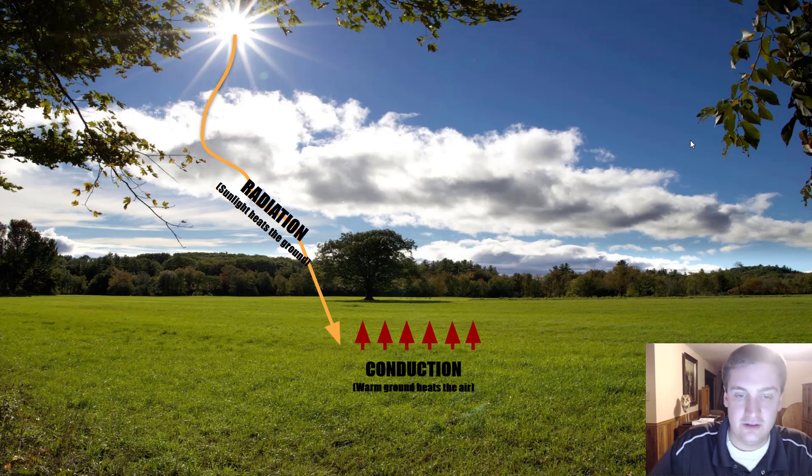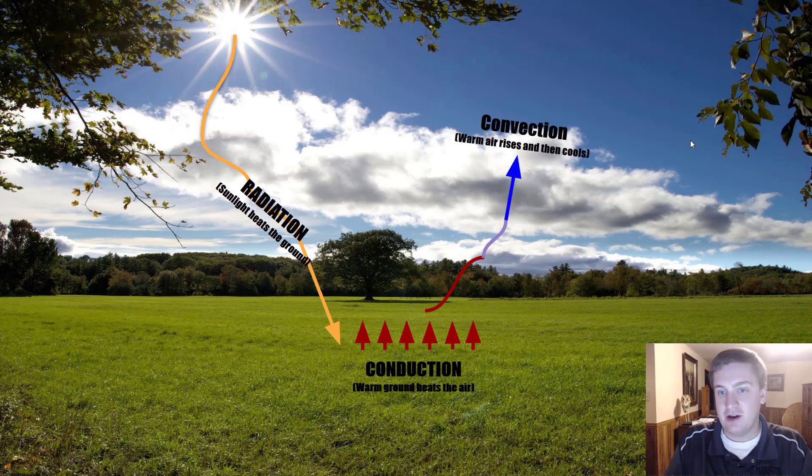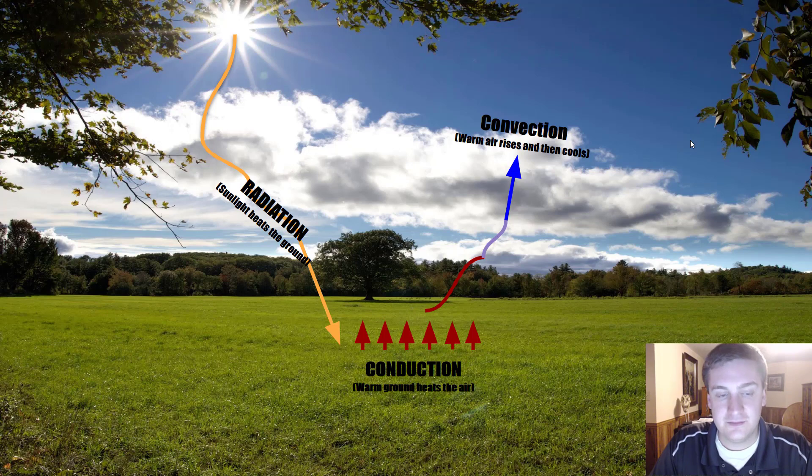And so you're going to conduct heat into the atmosphere through the ground. And then I have the process of convection because what happens is that warm air mass is going to rise. It's going to rise up to the point where it cools, contracts, and that's how you're forming some of the clouds that you're seeing out into the distance. So I've got all three heat transfer processes going on right here in this picture.